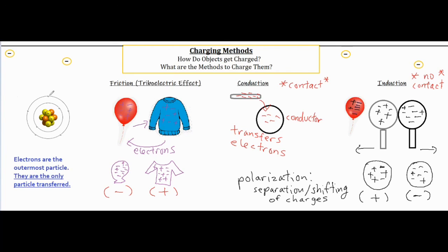So I hope that was helpful in helping you understand the different charging methods. You definitely want to know the basics of what an atom looks like and how the subatomic particles move. And then we have our three main methods of how they get charged by using friction, some form of contact, or some form of no contact by polarizing and then separating objects. So again, I hope that was helpful to you.